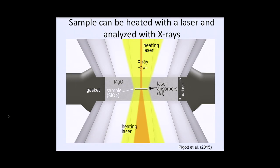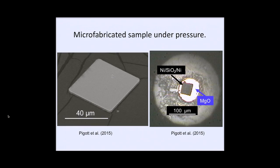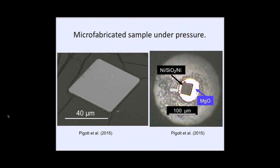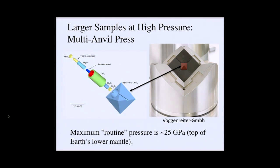You can squeeze samples up to really high pressures. Diamonds are transparent to lots of different radiation — you can shoot a laser through to heat up your sample, and put an X-ray beam through to look at the structure and how it changes as you compress and heat. Here is an example of experiments done by postdoc Jeff Piggott during his PhD. This is a little wafer with nickel on one side, SiO₂ in the middle, and nickel on the other side — the nickel absorbs laser radiation, allowing the sample to heat up. It's 40 microns — about the width of a human hair — and you can see it between the diamonds. For some experiments you need larger samples, such as when you're looking at how a material deforms, which is very difficult to do in a diamond anvil cell.